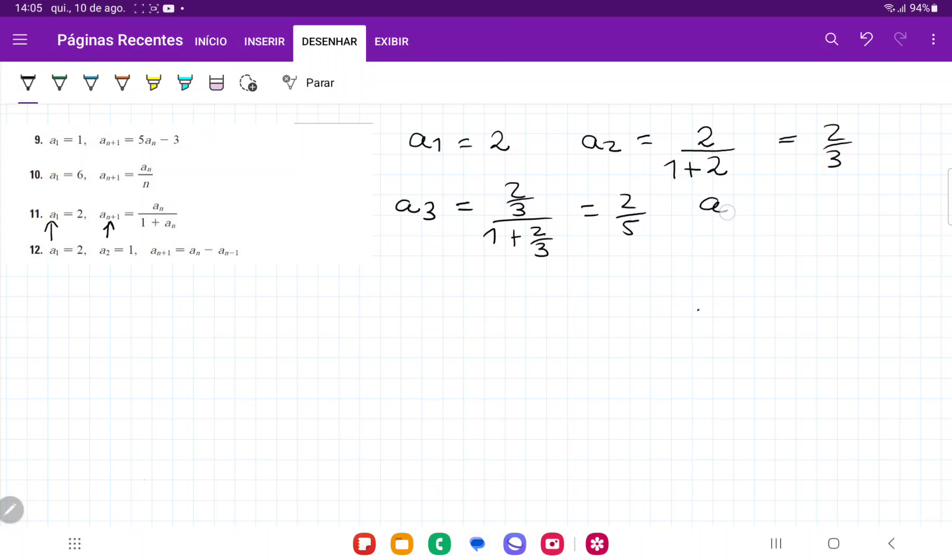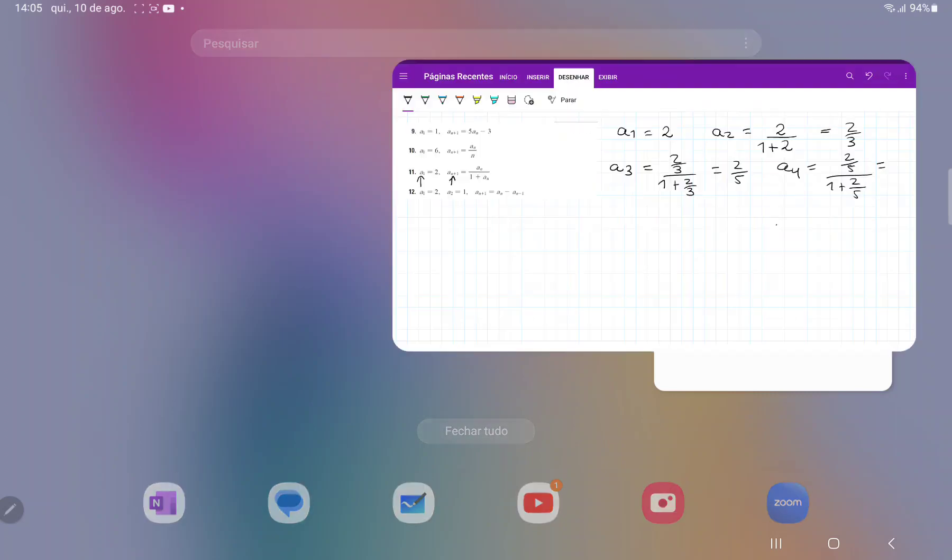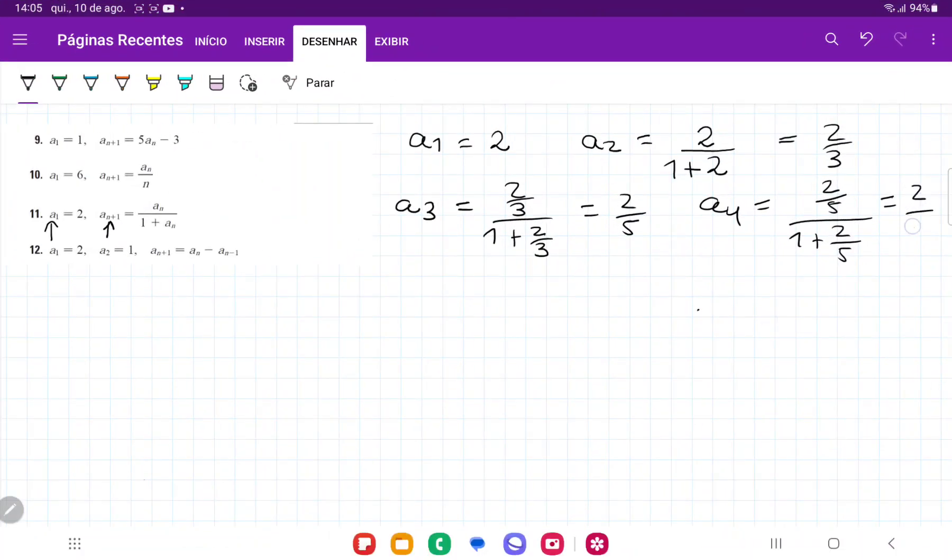And next we have that a4. Similarly, we're going to have the previous one, so 2 fifths over 1 plus 2 fifths, and that one is going to give us 2 sevenths.